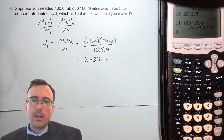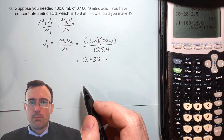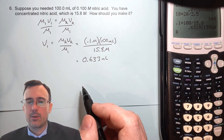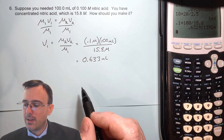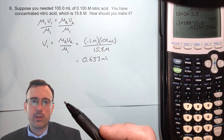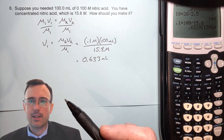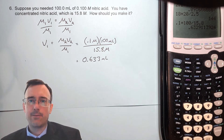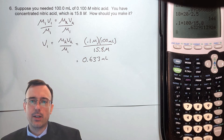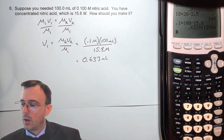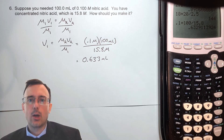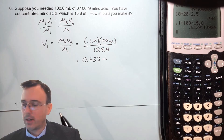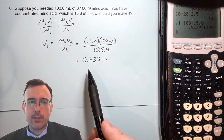The problem is you might not be able to easily measure 0.633 milliliters in the lab. You might be able to use a micropipette, but you typically don't want to use a micropipette when dealing with concentrated acids. So instead, we're going to use a glass graduated pipette and do an initial dilution and a final dilution — a series of two separate dilutions.